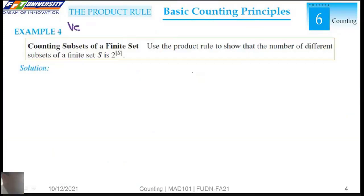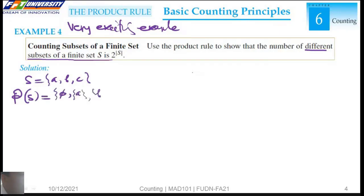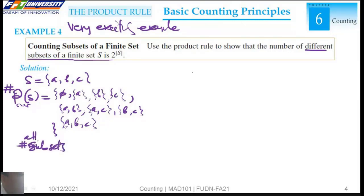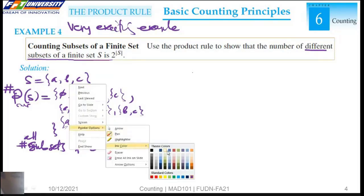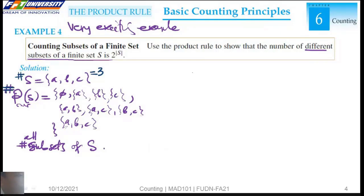This is a very exciting example. How many different subsets of a finite set? For example, here we have S = {a, b, c}. The power set of S is the set of {a}, {b}, {c}, the sets of two elements {a, b}, {a, c}, {b, c}, and the last we have {a, b, c}. The cardinality of the power set means the number of all subsets of S. The cardinality of S is 3, so the cardinality of the power set is 8, which means 2 to the power of 3. In general, the cardinality of the power set of S is 2 to the power of the cardinality of S.